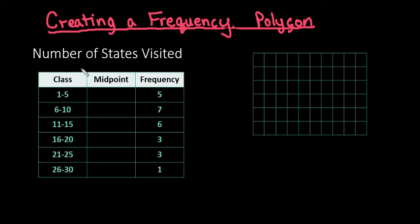What we're given is the classes along with the frequency. This data represents the number of states visited from a recent survey. There were five people that visited between one and five states, seven that visited between six and ten, and so on.